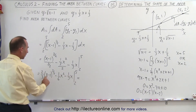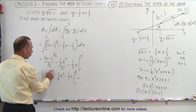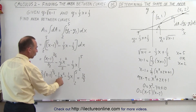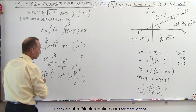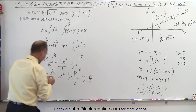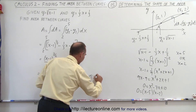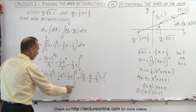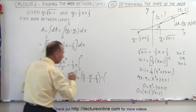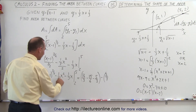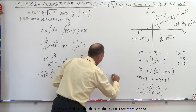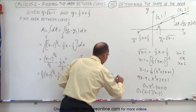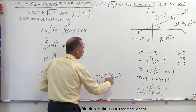Plugging in the upper limit x equals 5: (5 minus 1) to the three-halves is 4 to the three-halves — square root of 4 is 2, cubed gives 8 — so two-thirds times 8 equals 16 over 3. Then minus 25 over 6, and minus 5 over 3. For the lower limit x equals 2: two-thirds times 1 equals two-thirds, minus 4 over 6 equals minus two-thirds, minus two-thirds.